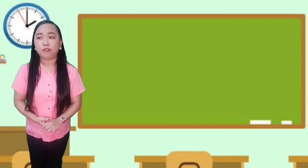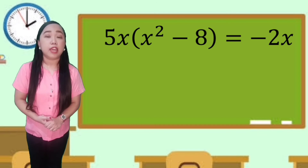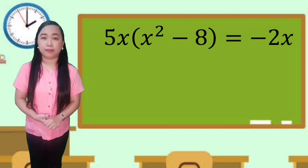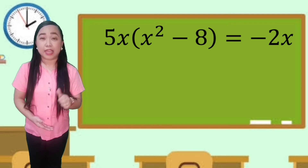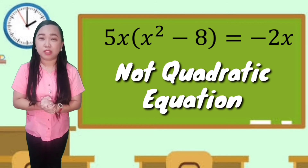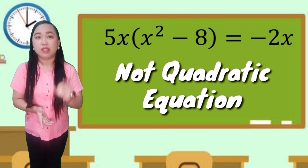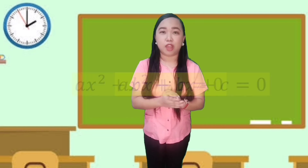For the last equation, 5x multiplied by the quantity of x squared minus 8 equals negative 2x — it is not a quadratic equation. When we apply the distributive property, 5x multiplied by x squared is 5x cubed, so the degree of the equation is 3. Now that you know how to determine if an equation is quadratic or not, let's proceed with writing quadratic equations in standard form.